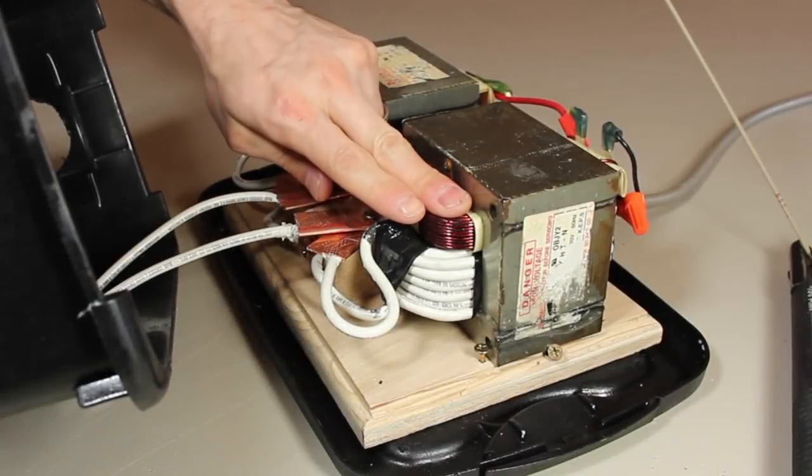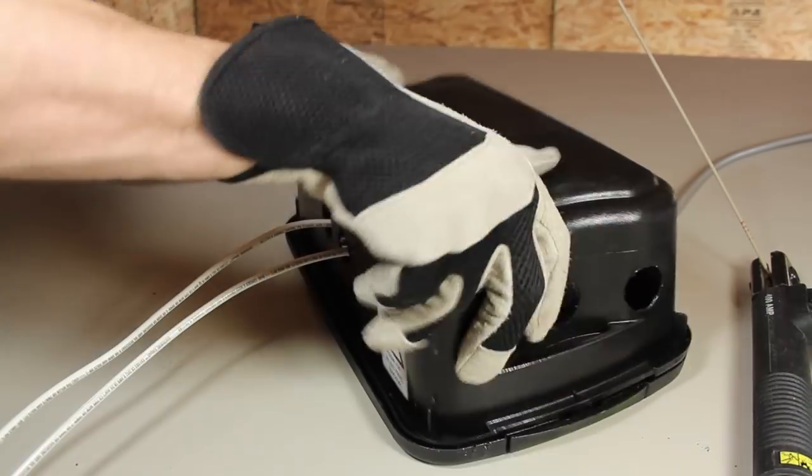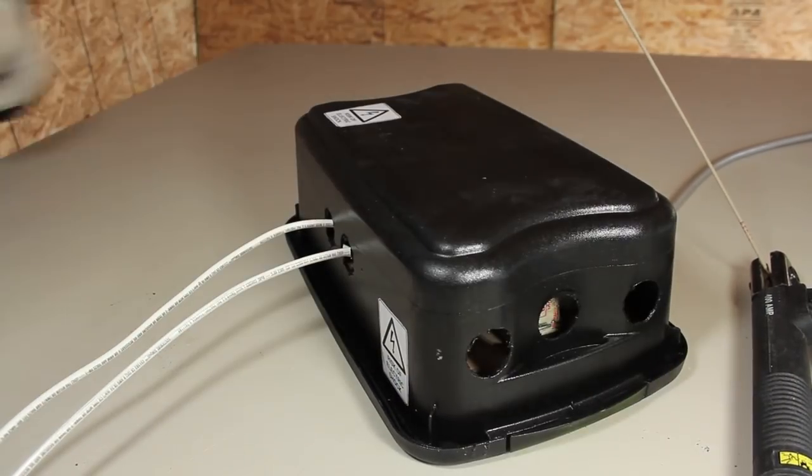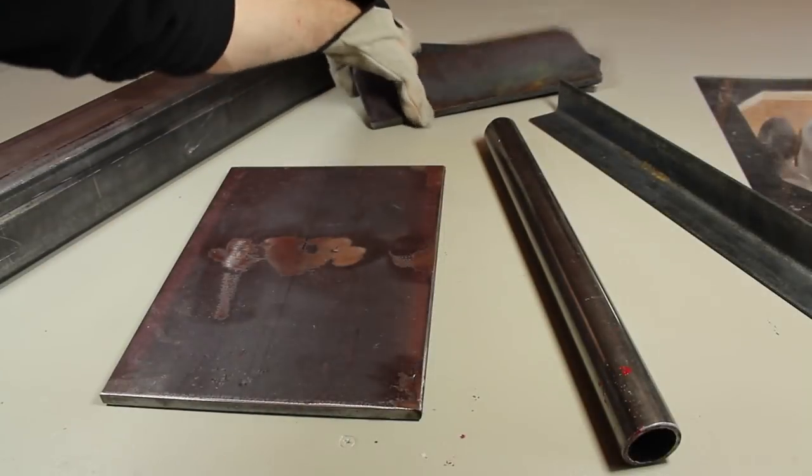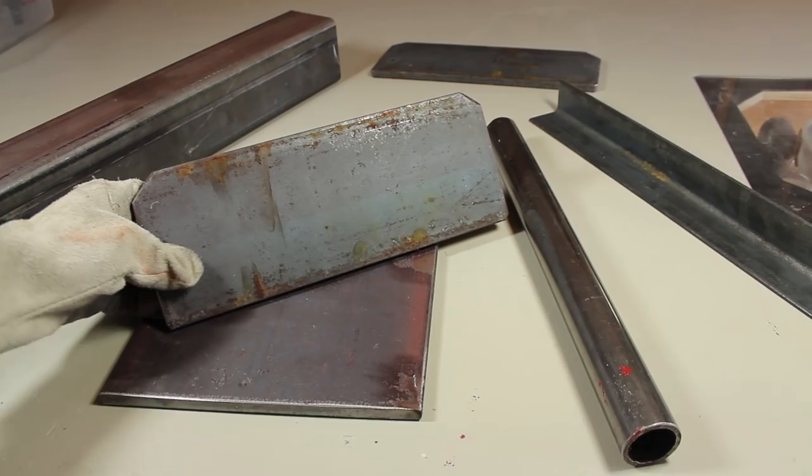I just modified these microwave oven transformers to weld metal and made a little container for it all to fit into. This arc welder is finished and ready for testing, so to do that, I got some pieces of scrap metal from a welding shop down the road.